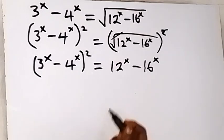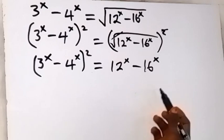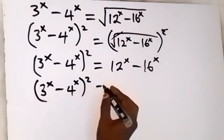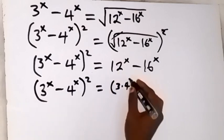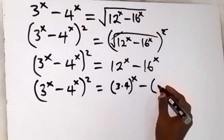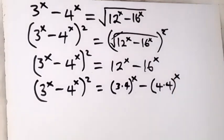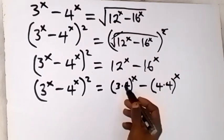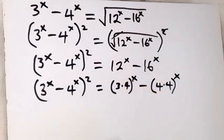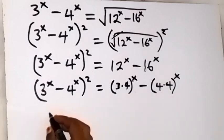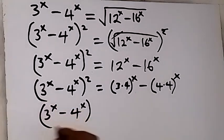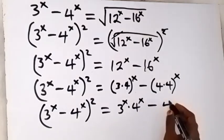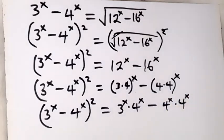Let's express 12 in terms of 3 and 4, and also 16. So we have 3 raised to power x minus 4 raised to power x, all squared. 12 can be written as 3 times 4, raised to power x. Then minus 16, which can be written as 4 times 4, raised to power x. When we expand the right-hand side, each factor is raised to power x, giving us 3 raised to power x times 4 raised to power x, minus 4 raised to power x times 4 raised to power x.